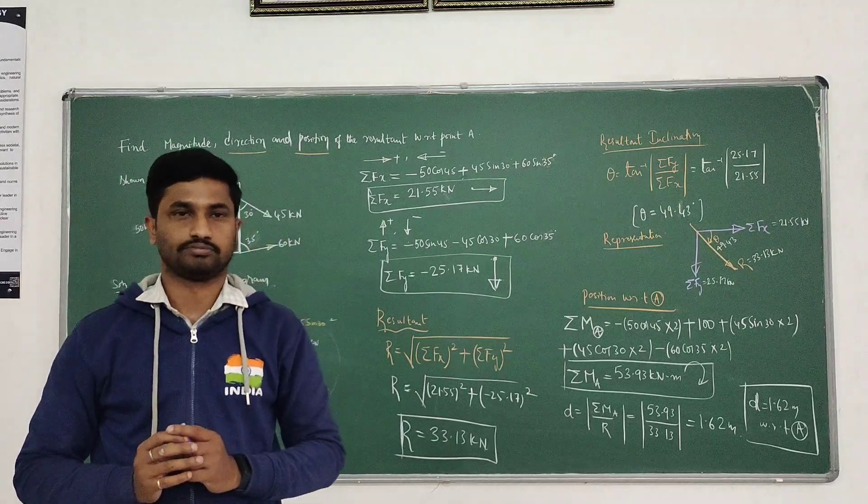Now compute the resultant R, given by the square root of (sigma Fx squared plus sigma Fy squared). Substituting the values: R equals square root of (21.55 squared plus 25.17 squared), which gives R equal to 33.13 kN.